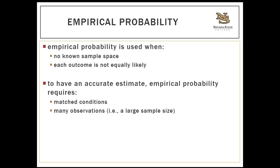You need matched conditions — collecting data in the same type of situation you want to predict probabilities in — and a large sample size. For example, if you collected data for one day at the ER at St. Rose with 197 patients, you need to ask whether those patients are representative of all future patients. Avoid collecting data on extreme circumstances — you wouldn't base predictions on New Year's Eve with more alcohol-related injuries. Ideally, collect data on multiple or randomly selected days over the course of the year.